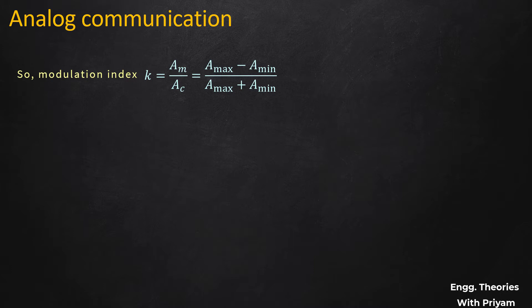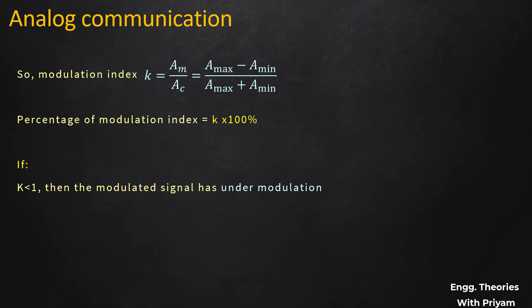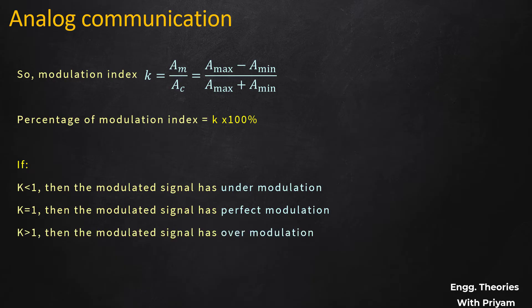The percentage modulation index equals k × 100%. The level of modulation depends on k: if k < 1, the signal has under modulation; if k = 1, it has perfect modulation; and if k > 1, it has over modulation.